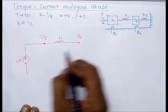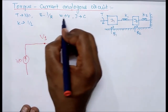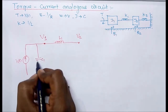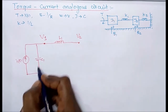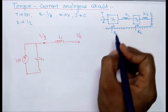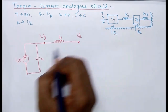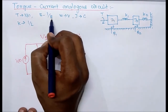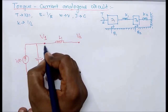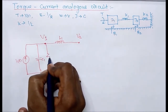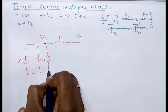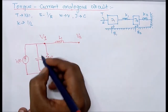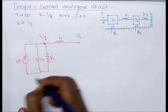Apart from the current source, J1's equivalent is a capacitor. Therefore, capacitor C1 is connected at node one. For B1, its equivalent is one-over-resistor, but in the electrical circuit we use R directly. Therefore, R1 is connected at node one. Node one part is now complete.